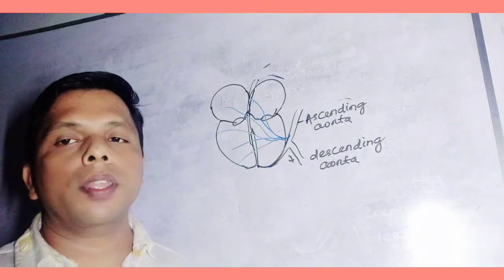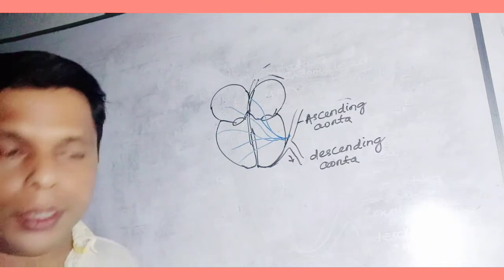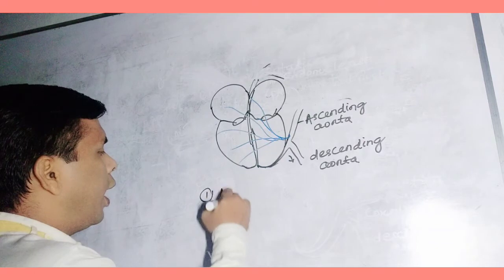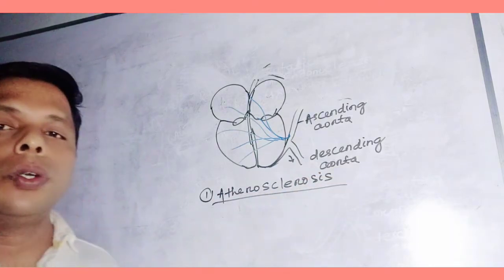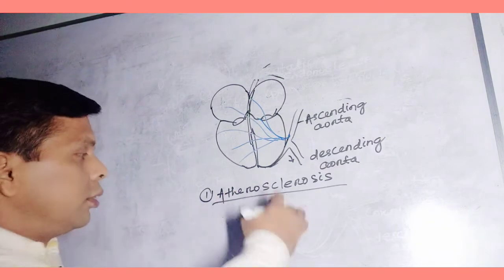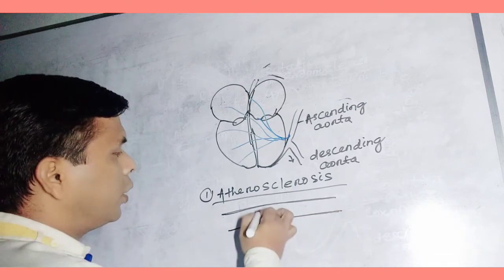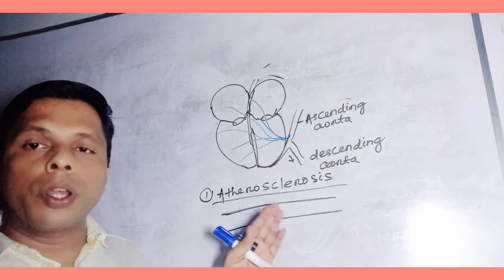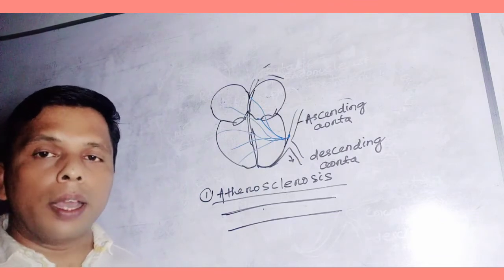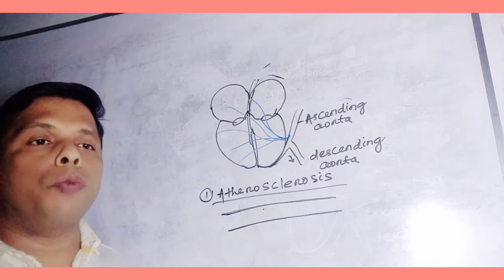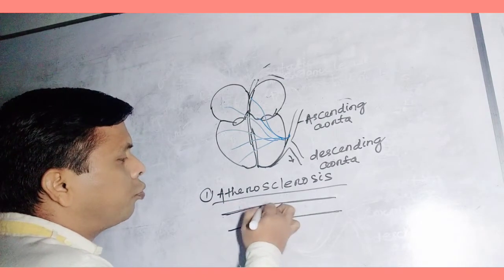First we have to discuss what are the causes. Why does the blockage take place in this coronary artery? The first cause is atherosclerotic blockage. Atherosclerosis is the first cause and it is the main cause.